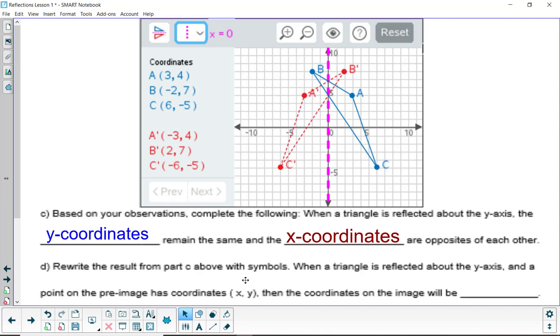And how would you write that with symbols? x, y would map to what ordered pair? The opposite of x, comma, the same y-coordinate. And again, make sure you understand both.